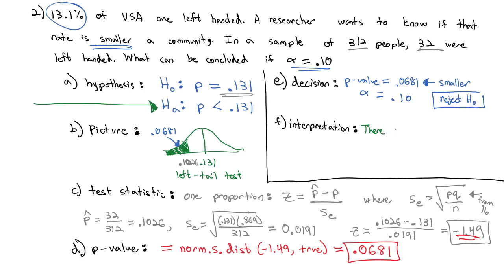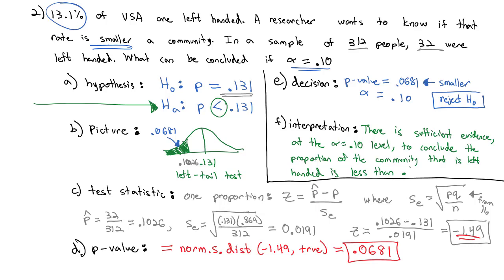So what does that look like for our problem? We can say there is, because we successfully rejected, so there is, it's positive, sufficient evidence, comma, at the alpha equals, alpha we said was 0.10, level, to conclude. And then we're going to use the alternate hypothesis in context, that p is less than 0.131. The proportion of the community, in context, that is left-handed, is less than, because the alternate said less than, 0.131.